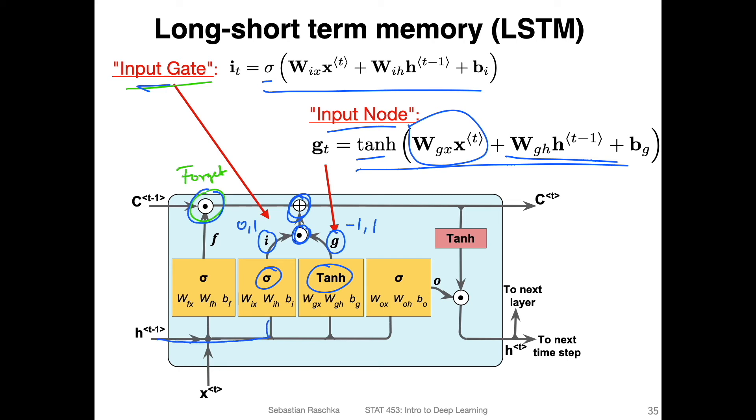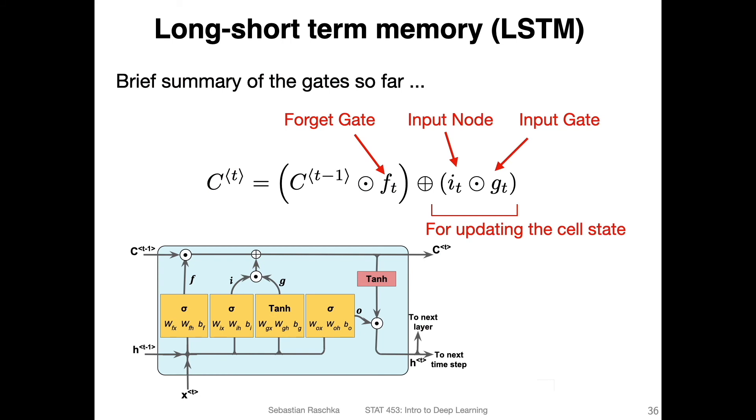These are the values we compute, we multiply them and then add them to the cell state. This information comes also from the previous cell state and the input here. Just looking at everything together, how we compute the output cell state for the next time step. To summarize, we multiply the previous cell state by this forget gate, then we add the product of the input node and the input gate.